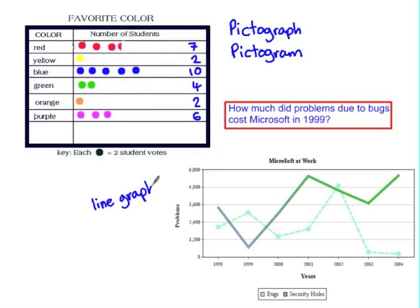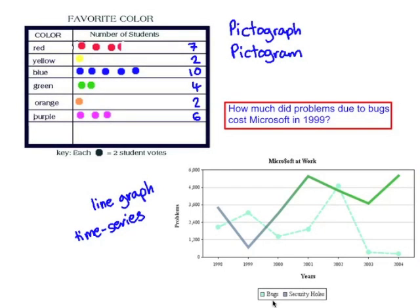The line graph is used here to represent time series data. And the key here tells us that we have two sets of data. The problems caused by bugs and the problems caused by security holes for Microsoft at work. Now this question says how much did problems due to bugs cost Microsoft in 1999? And that's represented by this point here, 1999. If we try and read across, approximately 3,000. But the key for the problems axis doesn't say that this is the cost of the problems nor does it say that it's the number of problems. So we need to be really careful here. Can we answer this question? If this is the cost of problems, then we can say that it's approximately 3,000 dollars. But if it's the number of problems, then we need more information in order to be able to answer that question.